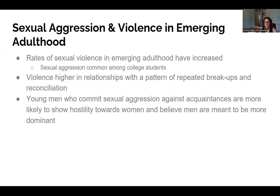During emerging adulthood — people between ages 18 and 30 — there is an increased risk of experiencing physical or sexual aggression. Between 25% to 50% of emerging adults report violence in a relationship within the last year, and it's becoming more prevalent in this age group than ever before. Those who experience a pattern of breakups and reconciliation — on-again, off-again relationships — are at a particularly high risk compared to other types of relationships.